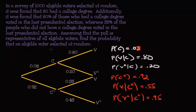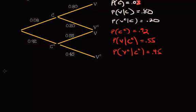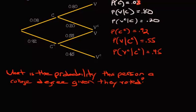Alright, so now... oh, I didn't write down the question. So the actual question: what's the probability that this person has a college degree given they voted? So what are we trying to find? What we want is the probability of C, they have a college degree given that they voted.